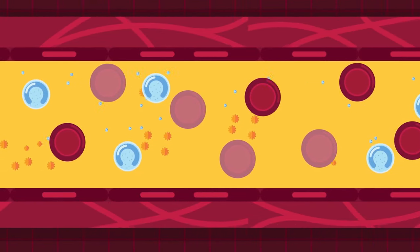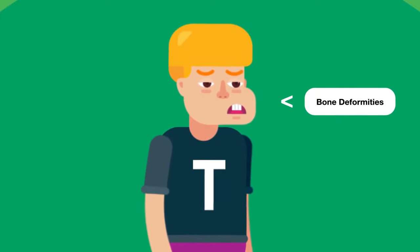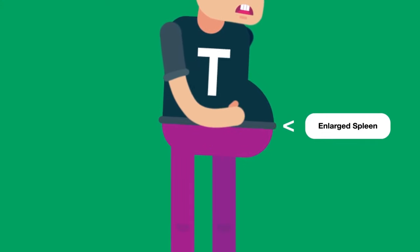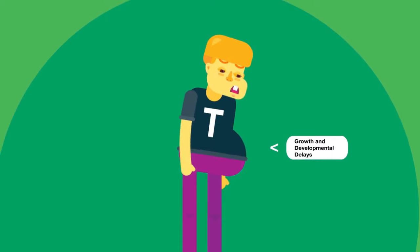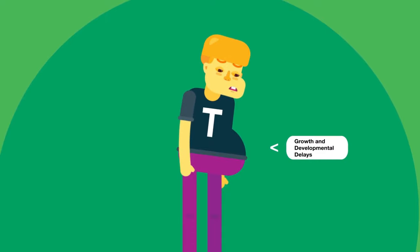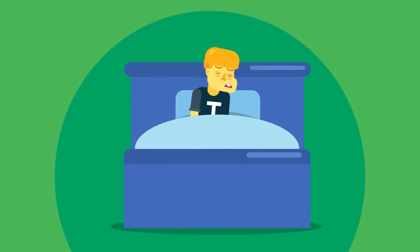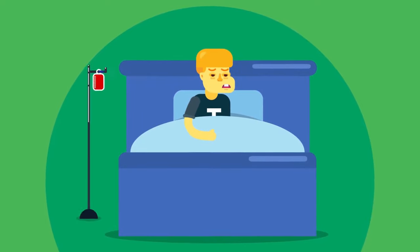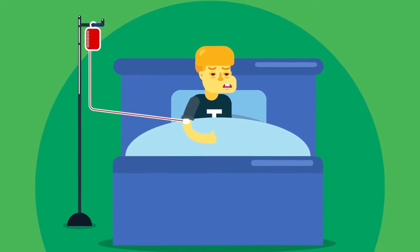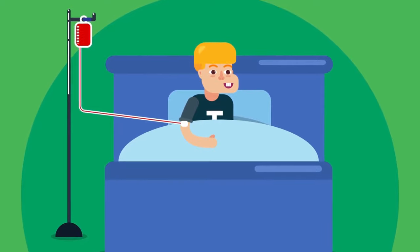These disorders can result in bone deformities, enlarged spleen, heart problems, growth and developmental delays in children. People who suffer from thalassemia need to undergo regular blood transfusions to maintain healthy RBCs and hemoglobin levels in the body.